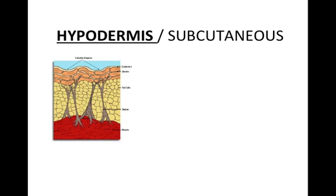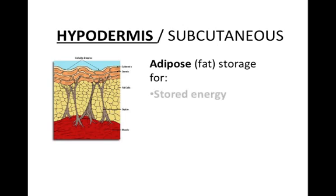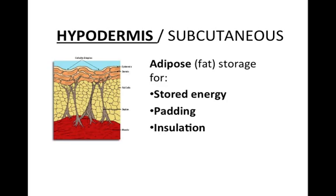The third deepest layer is called the hypodermis or subcutaneous layer — those two terms are used interchangeably. The primary tissue in the hypodermis is adipose, or fat, used for stored energy, padding of underlying tissues, and insulation against heat loss. Females tend to have a higher percentage of subcutaneous fat than males on average, which accounts for the more rounded features of a female.